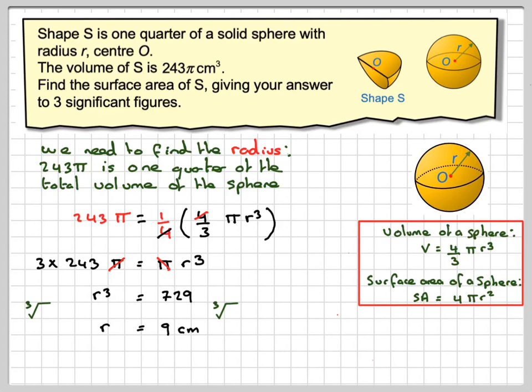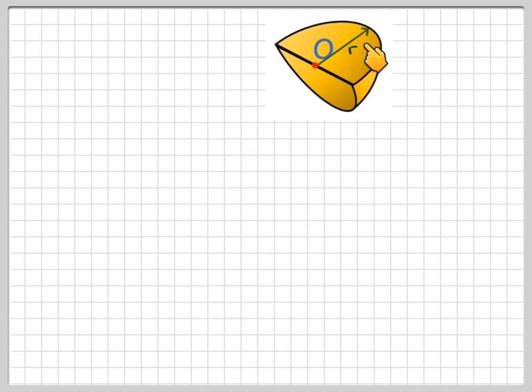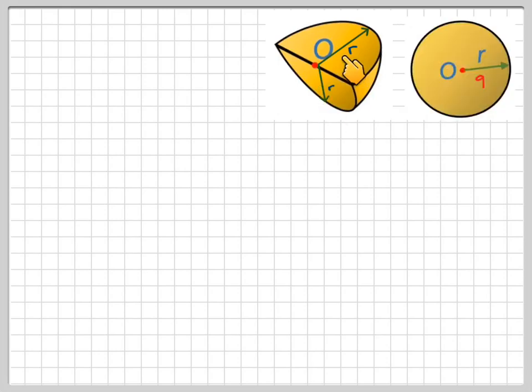Right, we're now going to set about finding the surface area of this. So first of all, we realize this is the radius, the same radius of the sphere, which is 9. Also, this is the radius of the sphere. So if we take this bit and this bit of the quarter of the sphere, what it makes is a circle with radius 9.